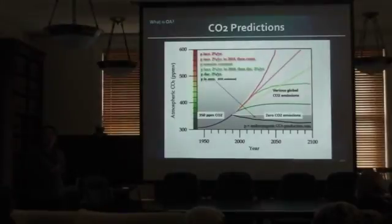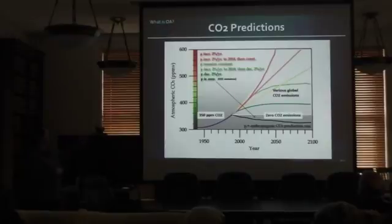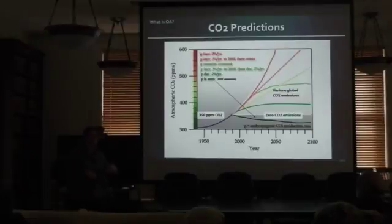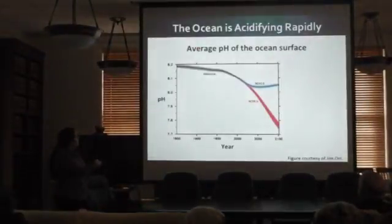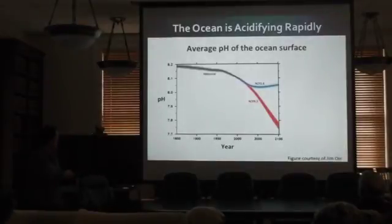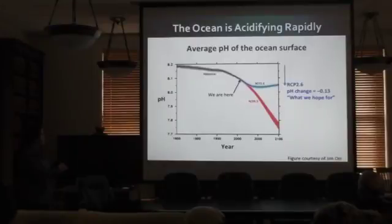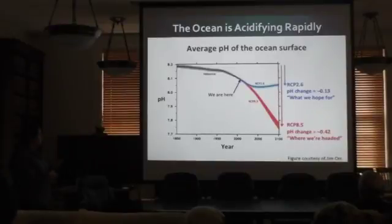We've seen models developed by atmospheric scientists showing different scenarios: if we continue as normal, if we curve our CO2 emissions, if we decrease them. Knowing what we understand about that chemistry equation, we can project that onto pH. We're here now, and there can be a drop in pH if we decrease CO2 emissions, or a much greater pH change if we continue business as usual.